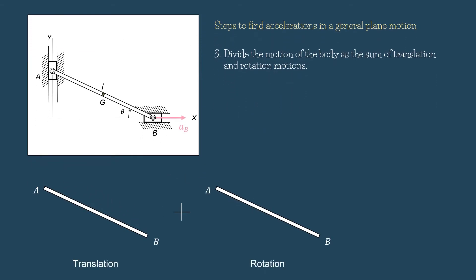Step 3: Divide the motion of the body as the sum of translation and rotation motions. Here we draw two link AB diagrams — one intended for the translational diagram and one intended for the rotational diagram. Step 4: Put the known acceleration on the translation motion diagram on all points of interest.